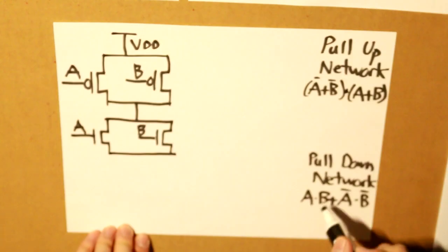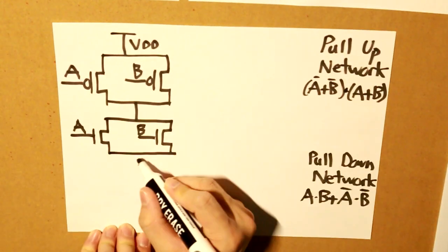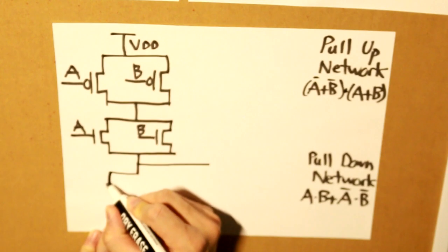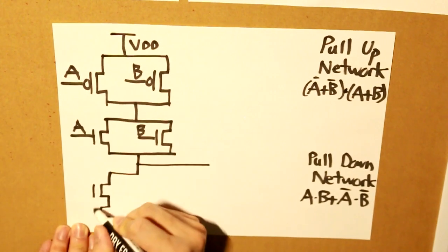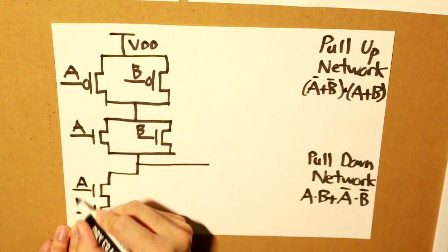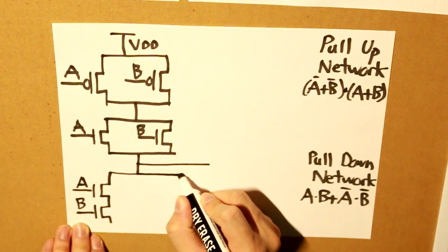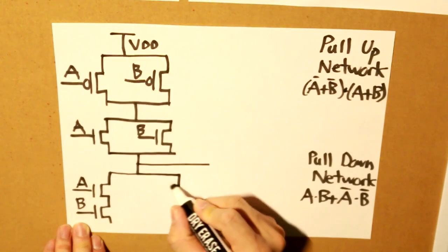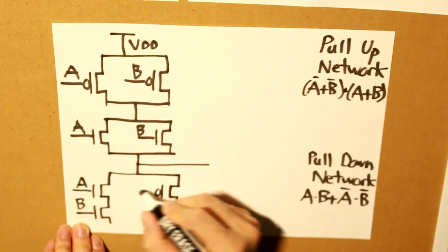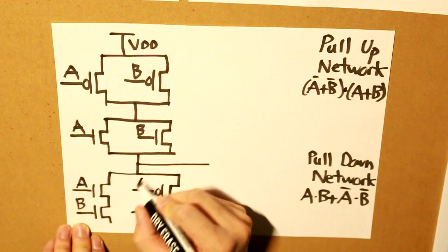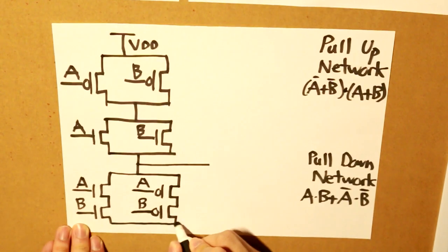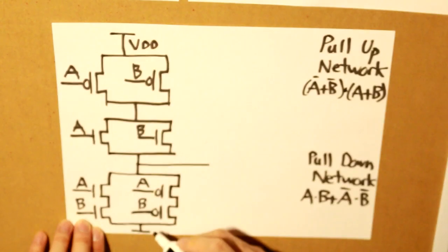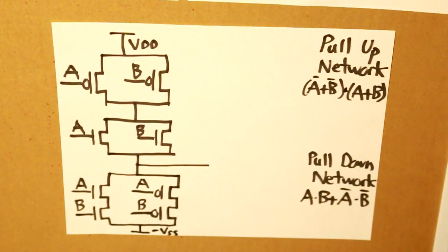And our pull-down network, we have A times B, so we have that in series. And then we have this in series again, but this time, both A and B is in inverse. And then finally here, we have our zero output, and then our high.